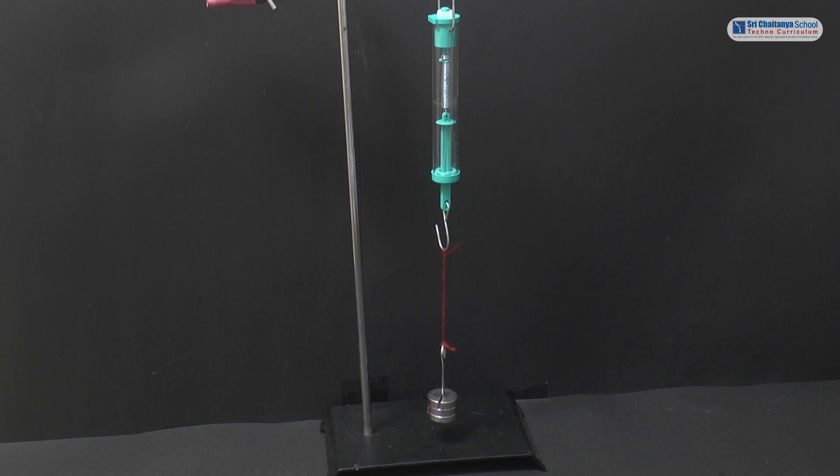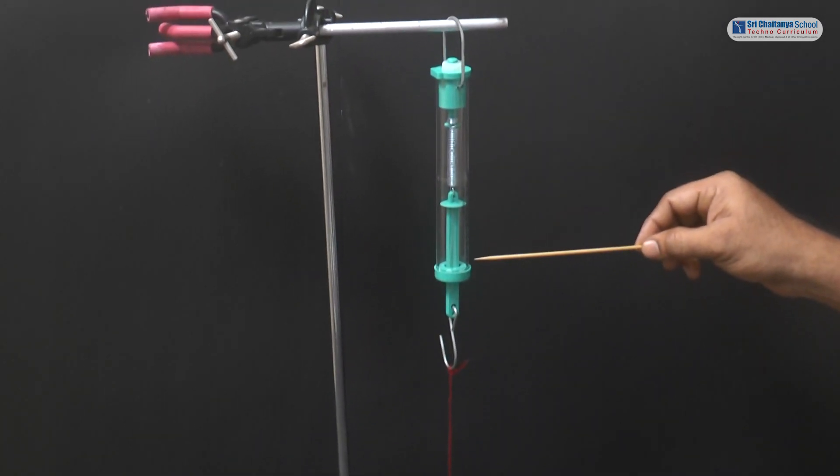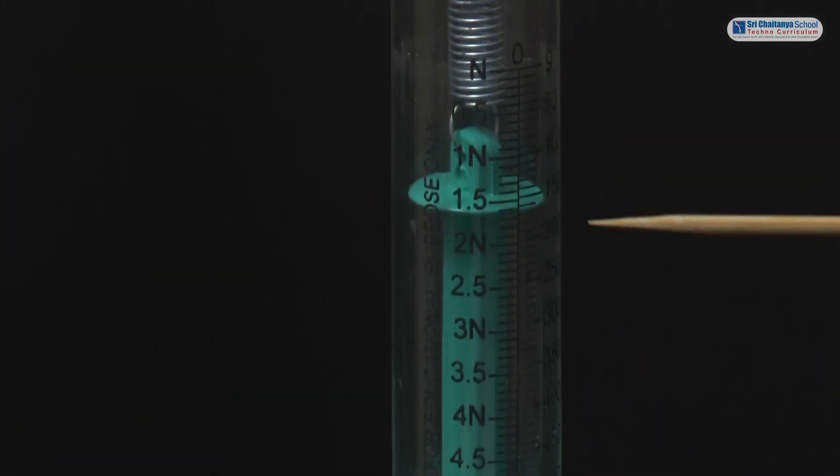Now, add some more weights to the hanger and note the reading of the spring balance. See here, the weight shows about 1.5 Newtons.